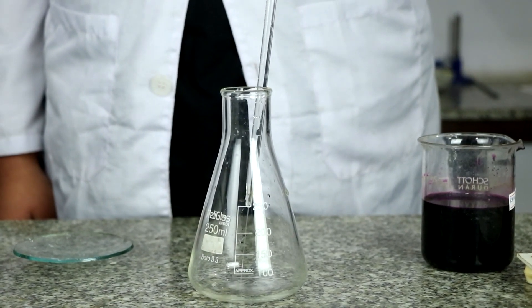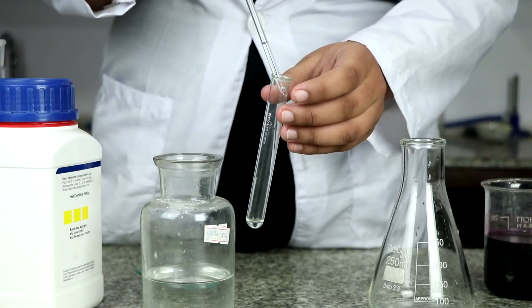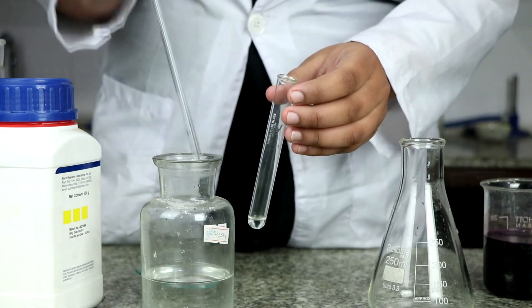Then add one test tube full of dilute H2SO4 to the required solution to prevent the hydrolysis of KMnO4.